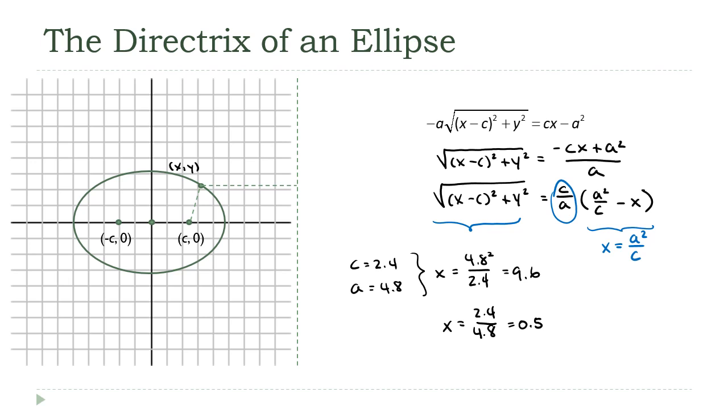So this value here, c over a, one thing I want to point out about it before we move on, is it has to be between 0 and 1. So 0 is less than c over a is less than 1.